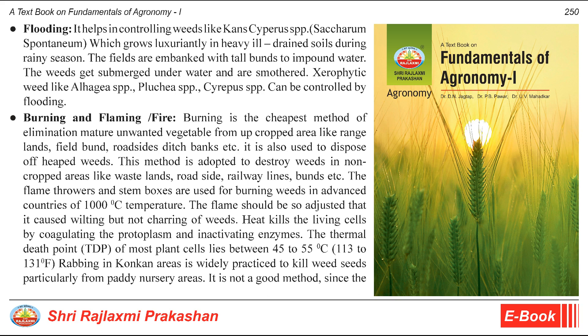Xerophytic weeds like Alhagi spp., Lasia spp., and Cyperus spp. can be controlled by flooding. Burning and flaming: burning is the cheapest method of eliminating mature unwanted vegetation from uncropped areas like rangelands, field bunds, roadsides, and ditch banks. It is also used to dispose of heaped weeds. Flame throwers and steam boxes are used for burning weeds at 1000 degrees Celsius in advanced countries. The flame should be adjusted to cause wilting but not charring of weeds. Heat kills living cells by coagulating the protoplasm and inactivating enzymes. The thermal death point (TDP) of most plant cells lies between 45 to 55 degrees Celsius (113 to 131 degrees F).